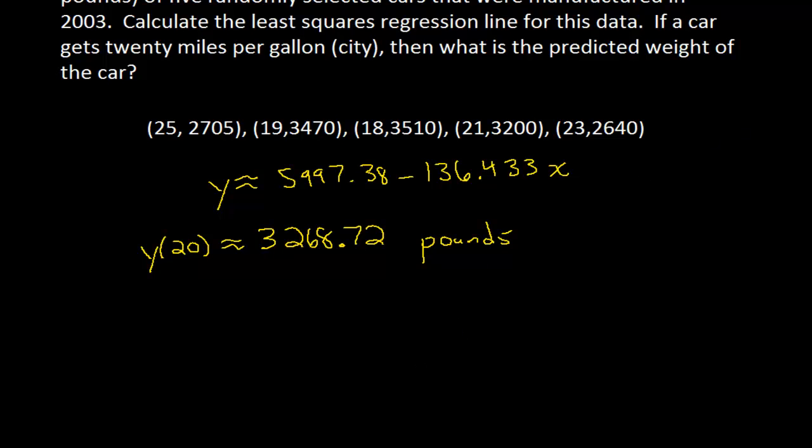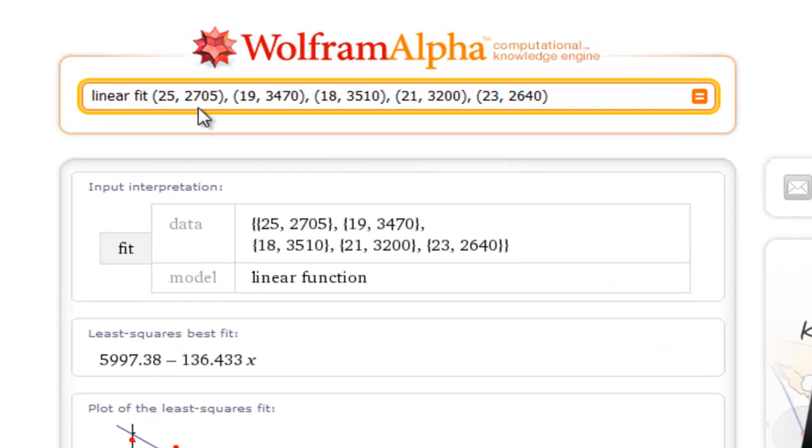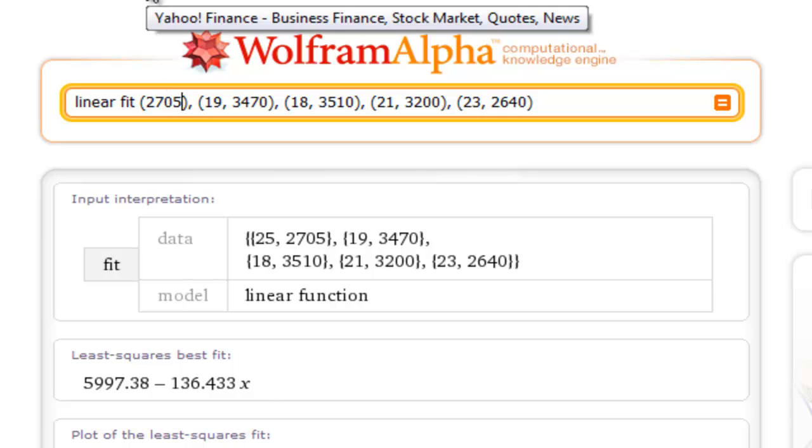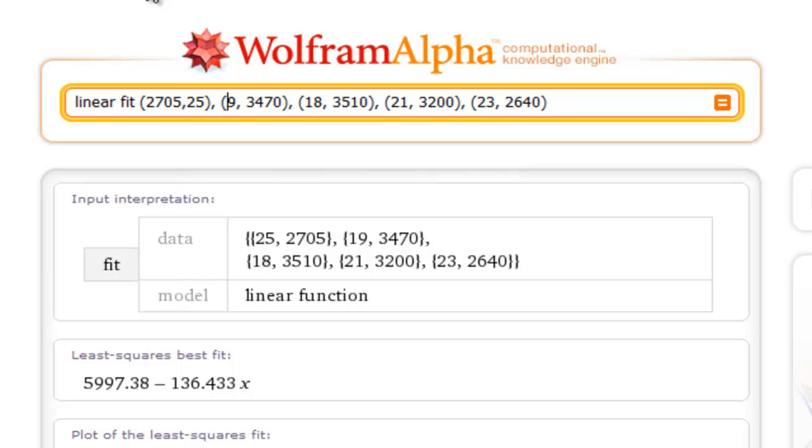The point I want to make by going into the next example - in the text I do examples 4.3.3 and 4.3.4 - is that if you switch the roles of the dependent and independent variables you will get a different least squares regression line. Let me do that using a different color, red for when I switch.